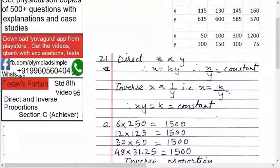So direct proportion means what? X is directly proportional to Y - if one increases, the other increases. Inverse means what? If one increases, the other decreases.